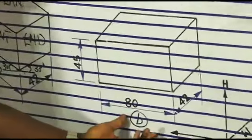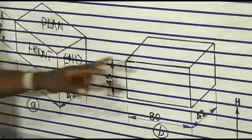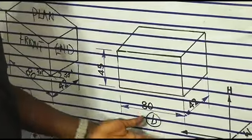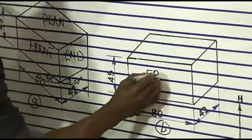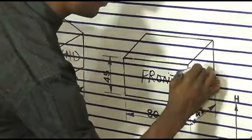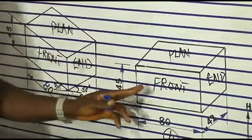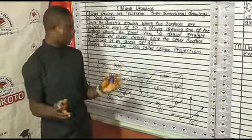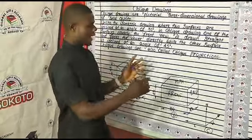Now, let's take a look at Figure B. It's the same shape as Figure A, the same object, but there is a difference between Figure B and Figure A. Figure B is an example of oblique drawing. You still have the same front surface here, the end there, and the plan. The only difference is that the front now is facing us directly, unlike the isometric where the front view is inclined at an angle of 30 degrees.